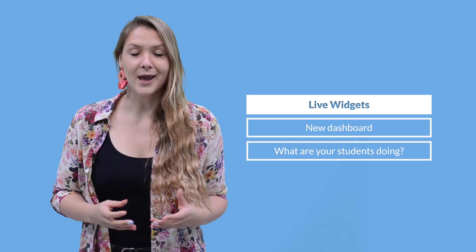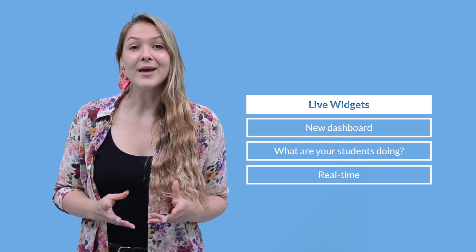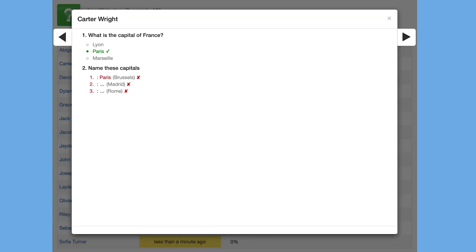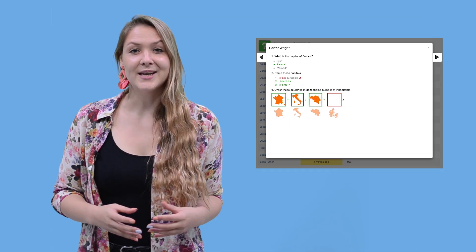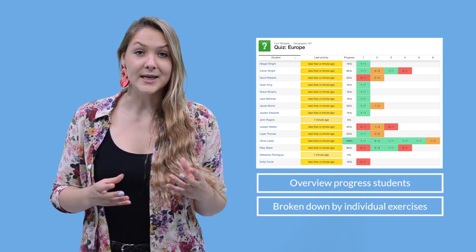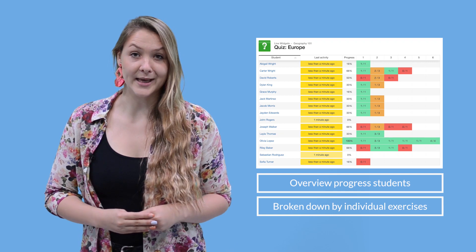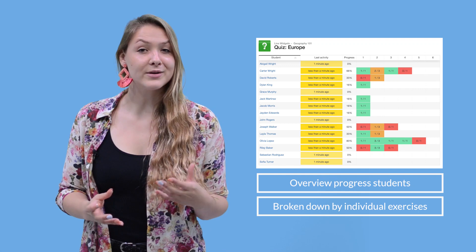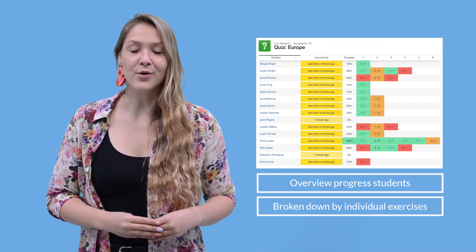Now let's move on to Live Widgets. Book Widgets Live Widgets gives you a new dashboard where you can see all the widgets your students are currently doing in real time. Take a look at the example. You get a nice overview of the progress of all students in your class and it's broken down by individual exercises. If you see a student that might need extra help you can open their individual work and see how they are doing.